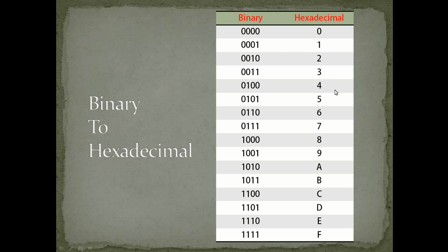So 0000 is 0 in hexadecimal, 0001 is 1, and it goes on. When you reach 1001, that is 9 in hexadecimal. Then 1010 is not 10 — instead we use A, and it continues up to F for 1111. So 4 bits of binary data can be represented as a single digit in hexadecimal. You should learn this table as it is essential for all microcontrollers.